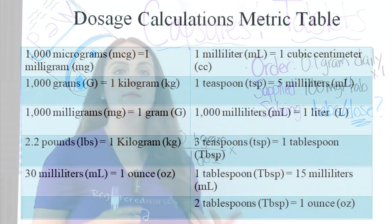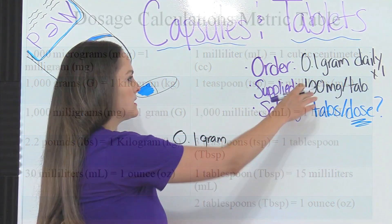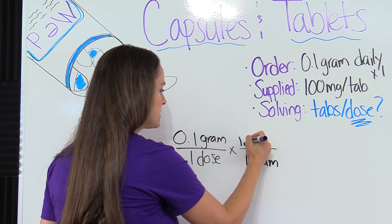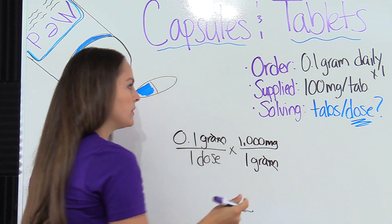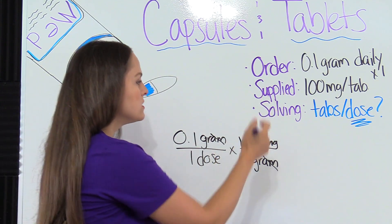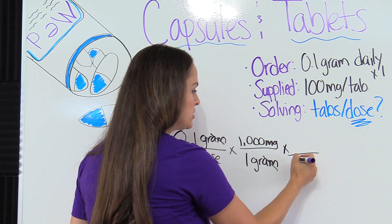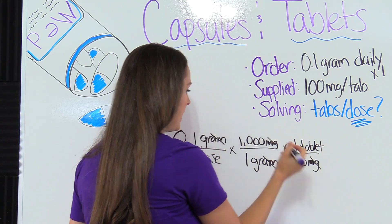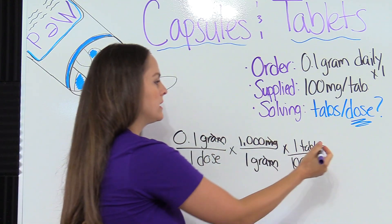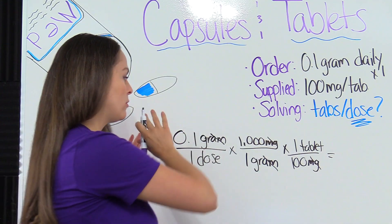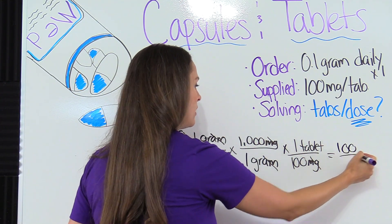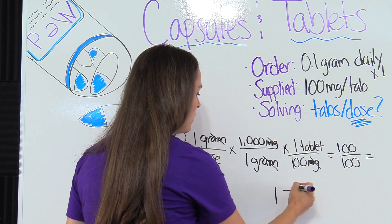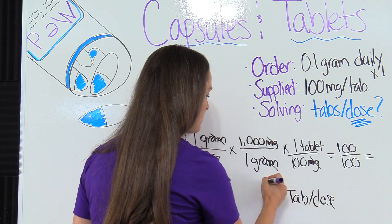Remember, you have to know your metric table — commit this table to memory. From the metric table, we know that one gram equals 1,000 milligrams. Grams cancels out, so we're now in milligrams, and we can plug in what we have on hand: each tablet has 100 milligrams, which equals one tablet. We multiply everything at the top and bottom and divide. We get 100 over 100, and 100 divided by 100 is one. So our answer is one tablet per dose.